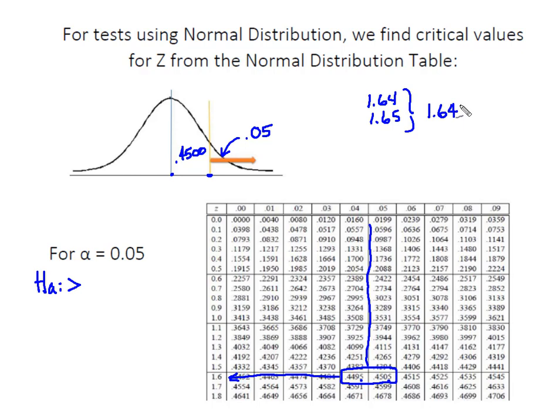What I know is that for every one-tailed right test at an alpha of 0.05, my critical value here will be 1.645. Had I been testing on the left side, I would have had a critical value of negative 1.645. Remember, that's because of the symmetry of our normal distribution.